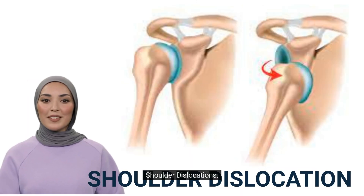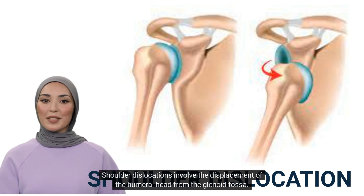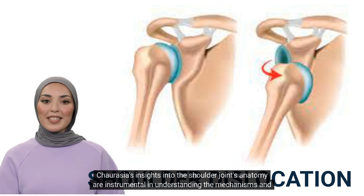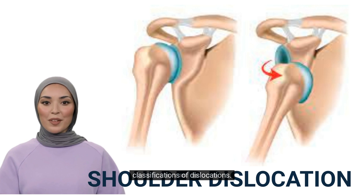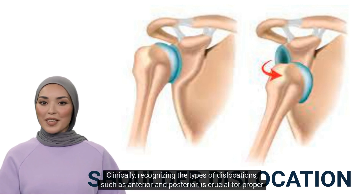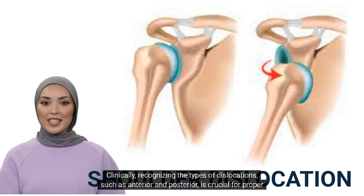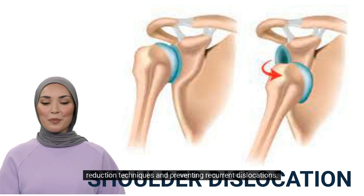Shoulder Dislocations: Shoulder dislocations involve the displacement of the humeral head from the glenoid fossa. Chaurasia's insights into the shoulder joint's anatomy are instrumental in understanding the mechanisms and classifications of dislocations. Clinically, recognizing the types of dislocations, such as anterior and posterior, is crucial for proper reduction techniques and preventing recurrent dislocations.